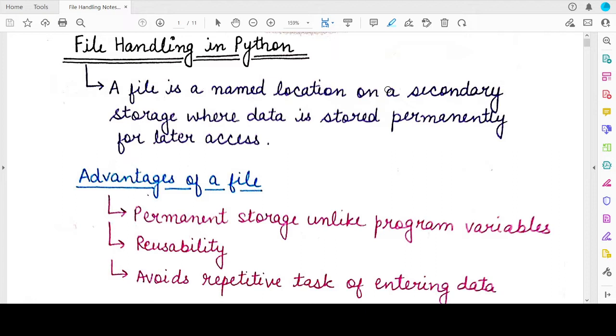And this file generally has a name. That is why we say that a file is a named location on a secondary storage. Secondary storage can be a disk, it can be any removable drive, removable pen drives and anything which is not affected by closing or opening of a program.